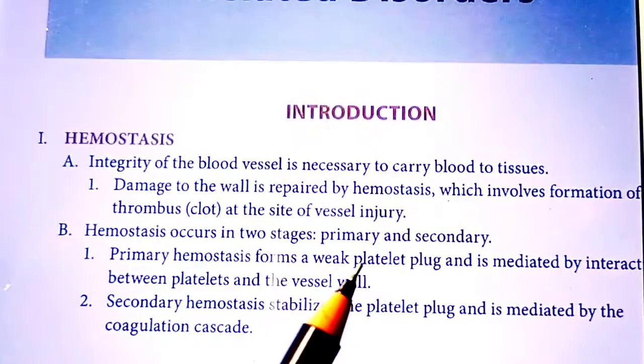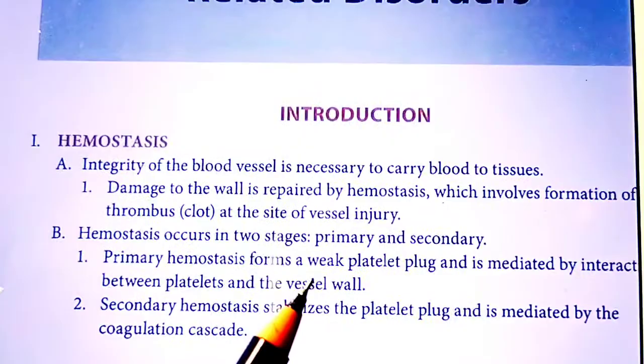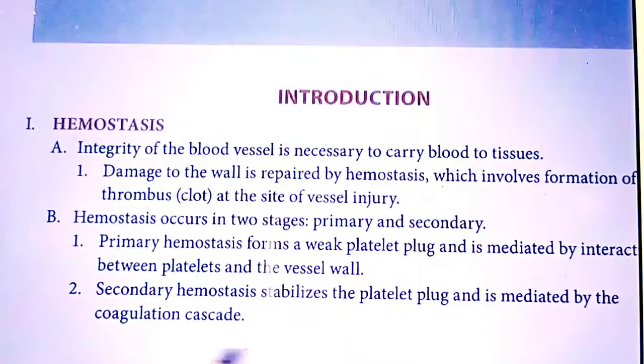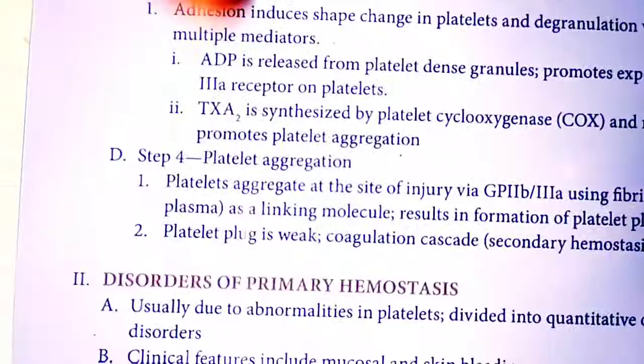Hemostasis occurs in two stages: primary hemostasis and secondary hemostasis. Primary hemostasis forms a weak platelet plug, and between the platelets and the vessel there is weak interaction. In secondary hemostasis, stabilization of that platelet plug occurs, mediated by the coagulation cascade.